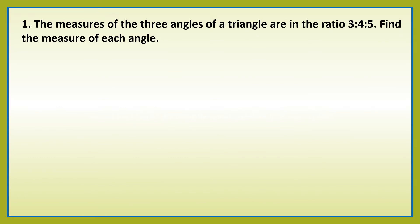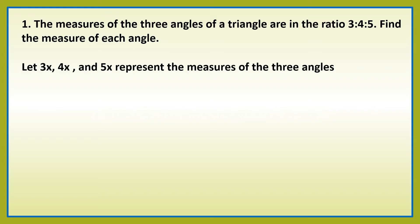Problem number one: the measures of the three angles of a triangle are in the ratio 3 is to 4 is to 5. Find the measure of each angle. Let 3x, 4x, and 5x represent the measures of the three angles. We're going to add the three angles and equate this to 180.